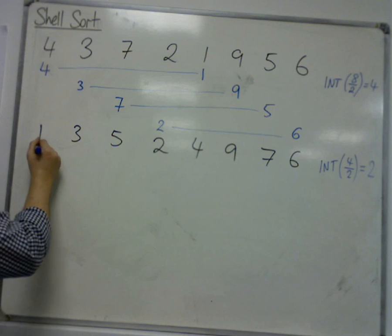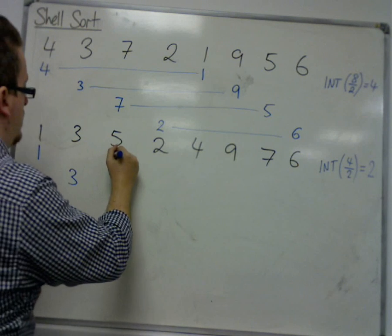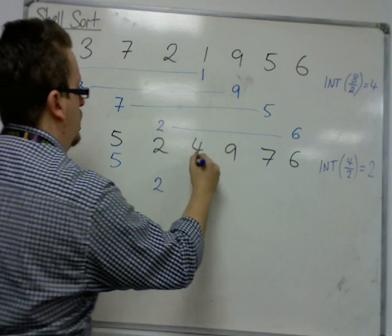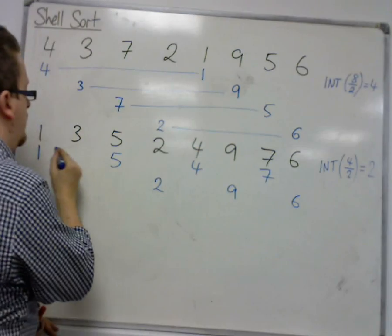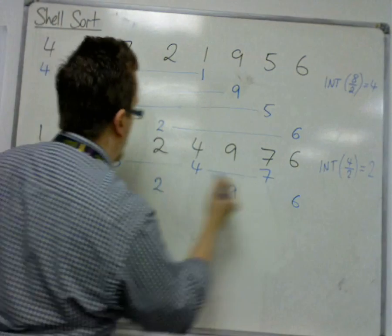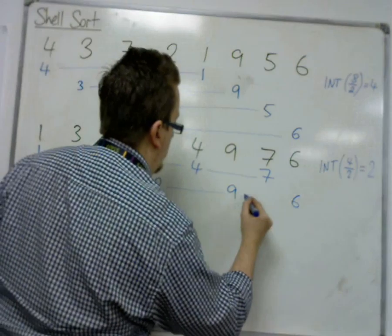So the sublist now for 2 would be 1, 3, 5, 2, 4, 9, 7, 6. So that this becomes a sublist, and this becomes a sublist.